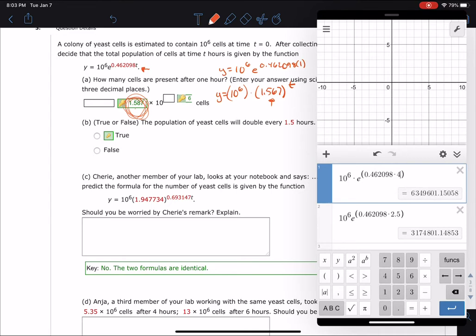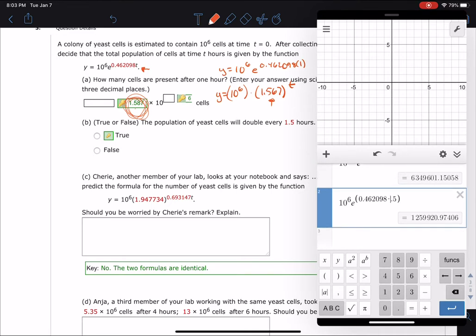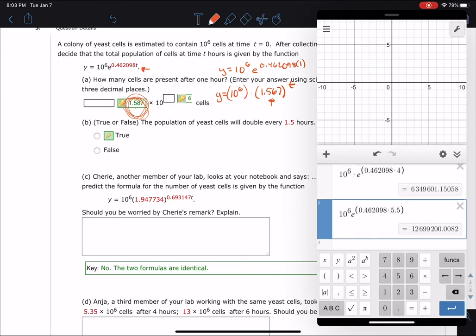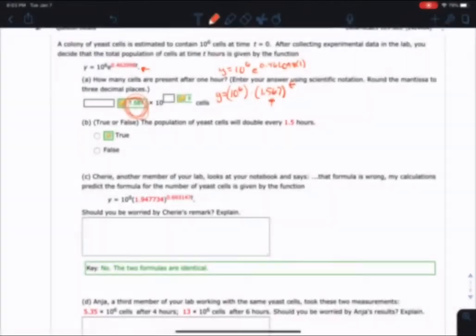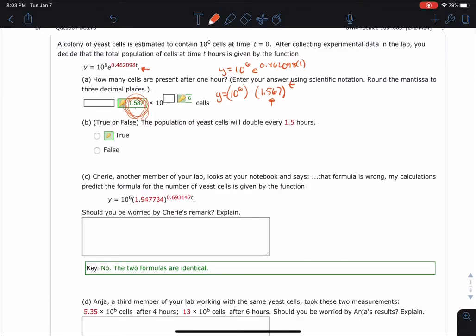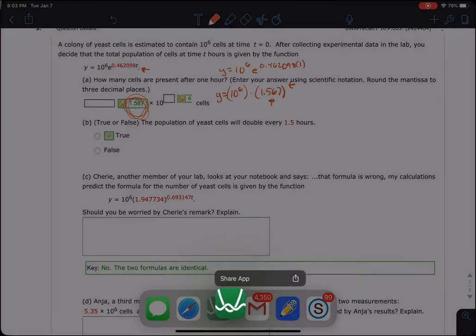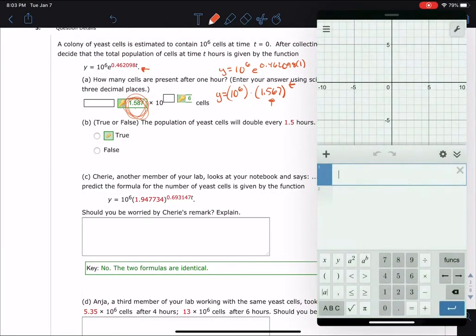It's that. And I could check it 1.5 hours after that, which would be 5.5. And the bottom should be double the top. And it is. So there's Cherie, another member of our lab looks at her notebook and says, I don't see what she says. She says that the formula is wrong. That her calculations predict the number of yeast cells is given by this function. Should I be worried about Cherie's remarks? Well, I'm going to test Cherie's remarks to see if she's correct or not.